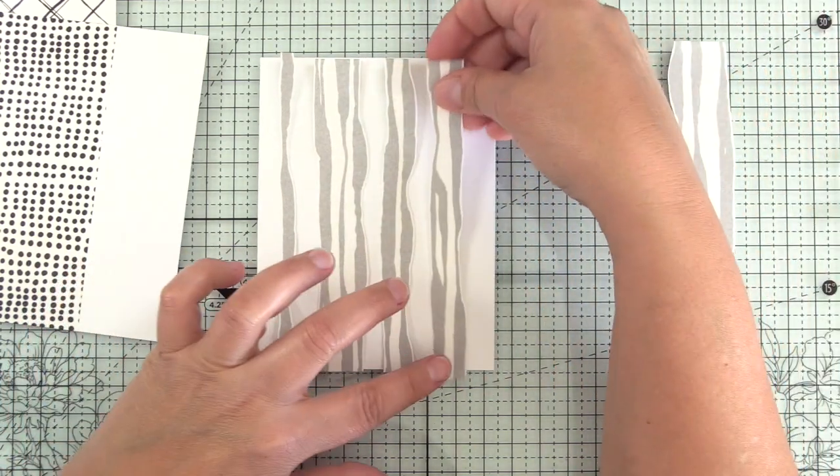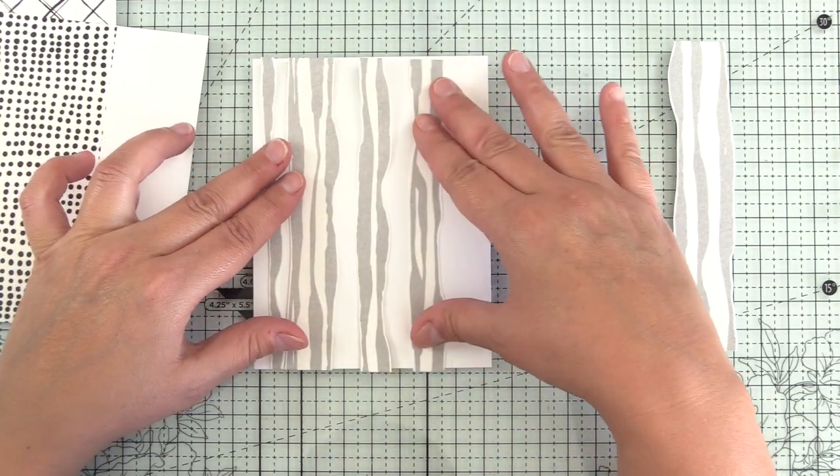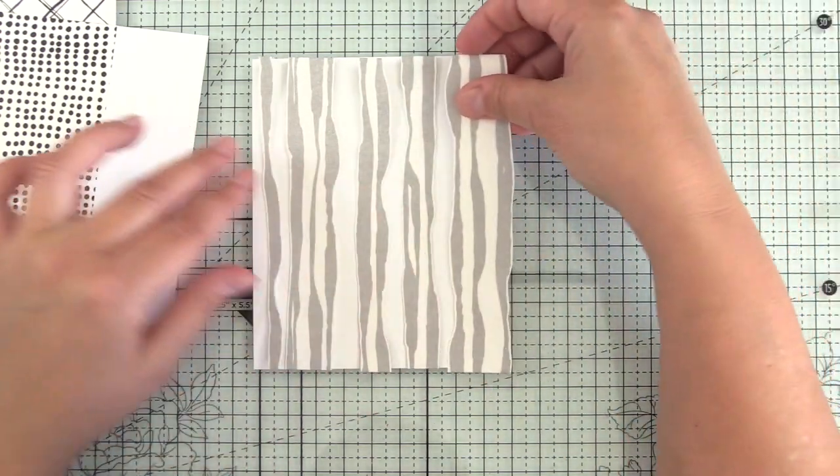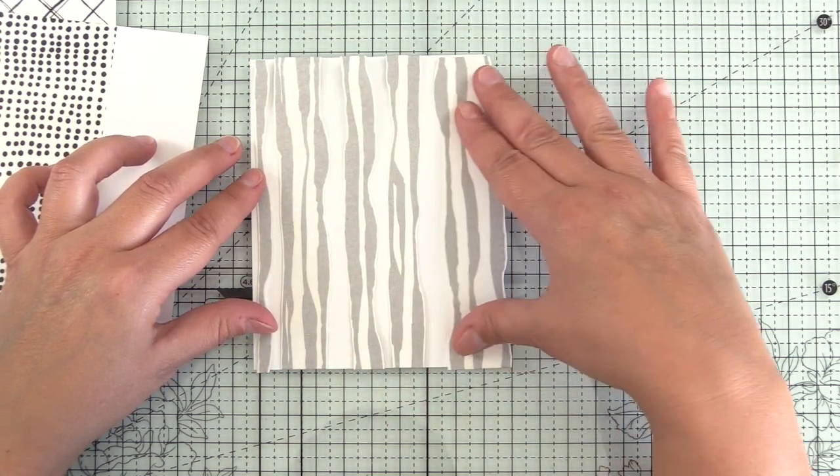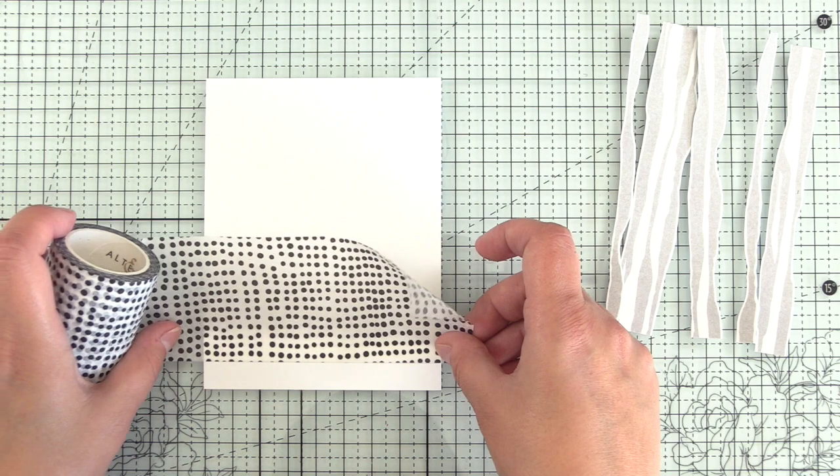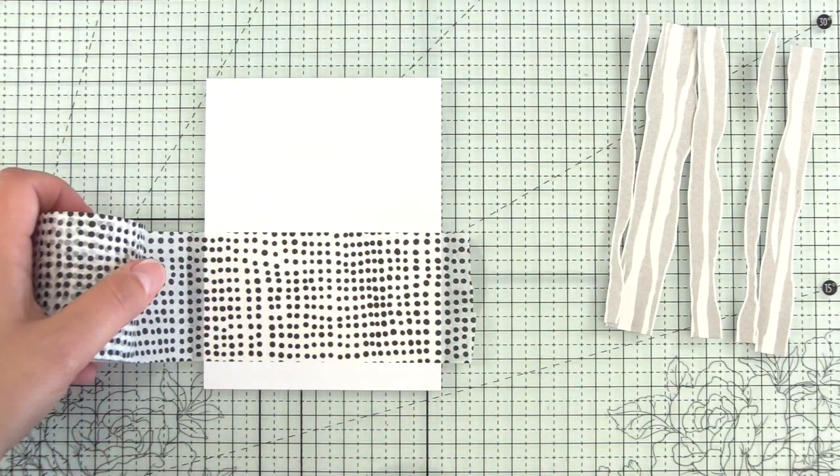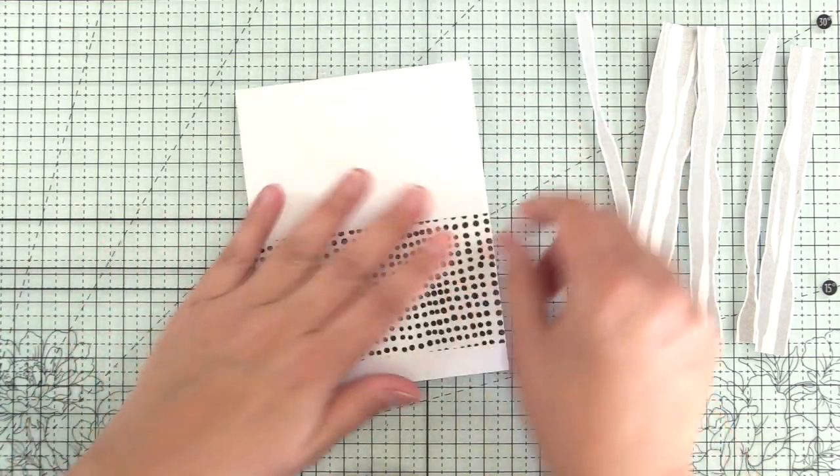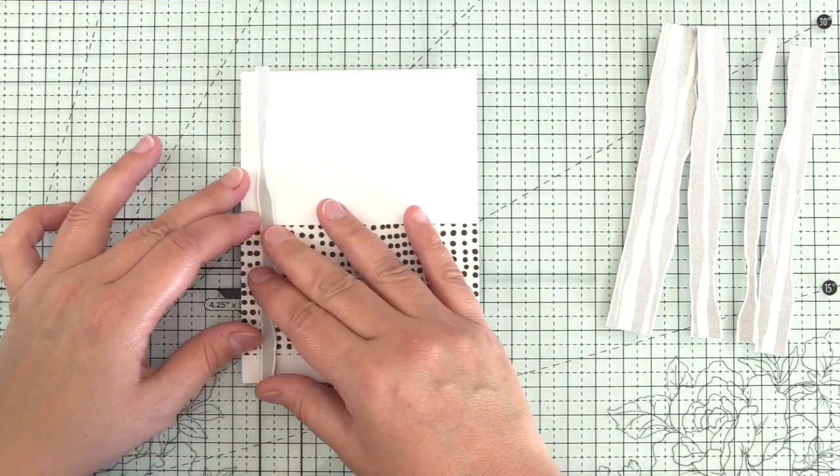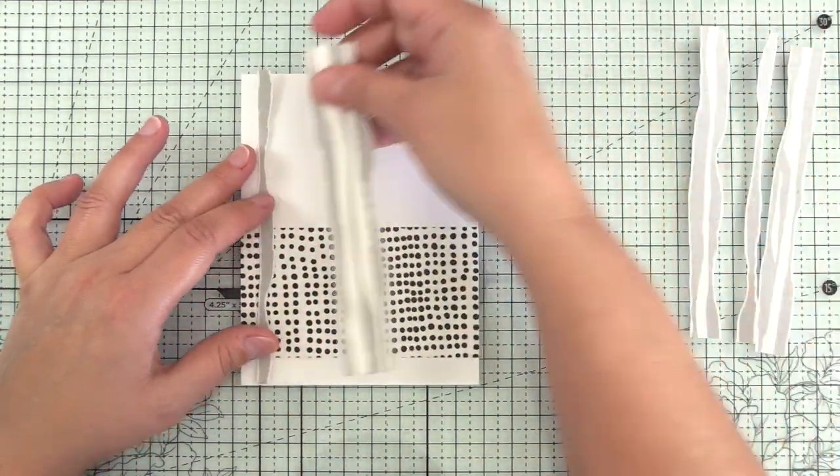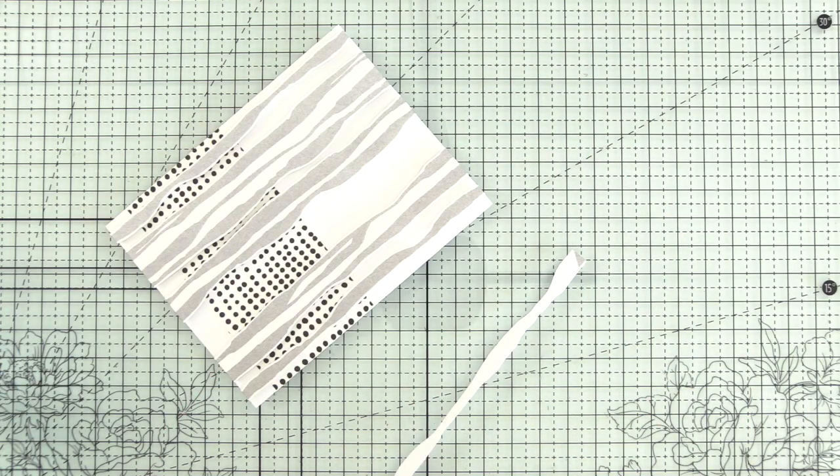But knowing that I wanted to add a die cut sentiment to it, I decided that it would be really cool to have the many dots washi tape behind it to kind of ground my sentiment and almost act as a sentiment strip. So I'm going to add a strip of that here. And then same thing, I'm going to just fold that around the back of the card so it's nice and adhered. And then I'll go ahead and arrange my grand stream stripes here so that I see what kind of arrangement I want, what kind of spacing I want in between them. And then I'll add foam tape.